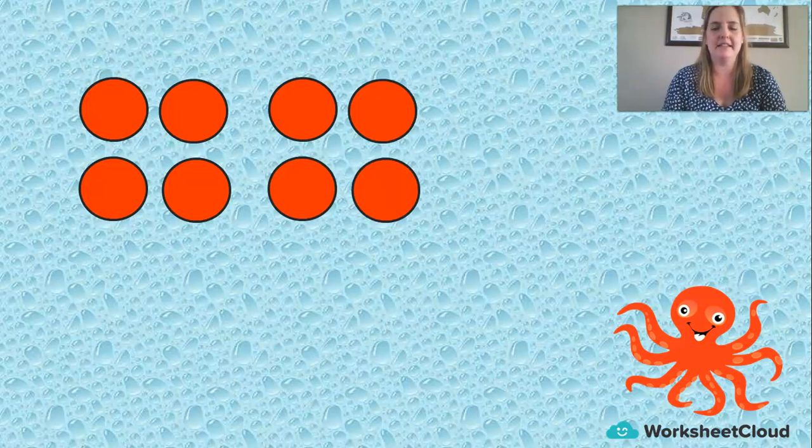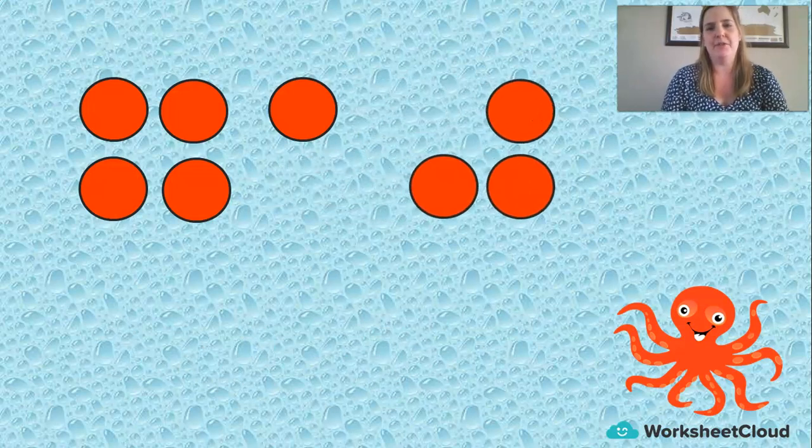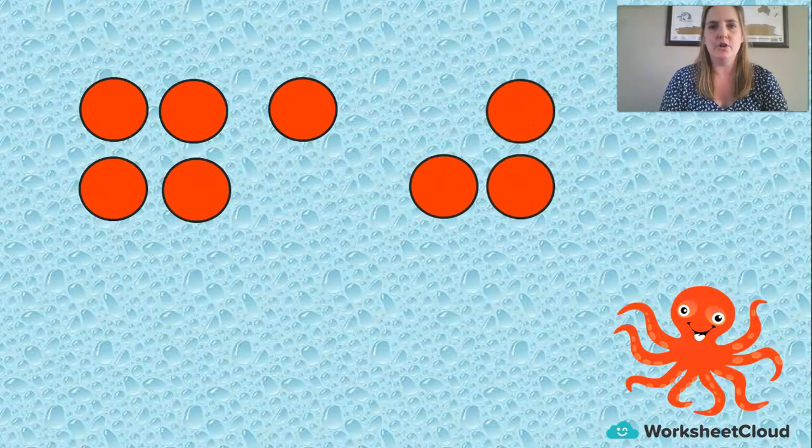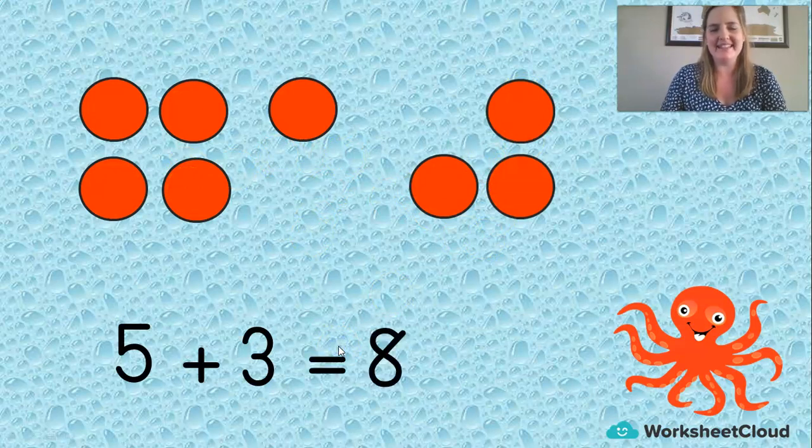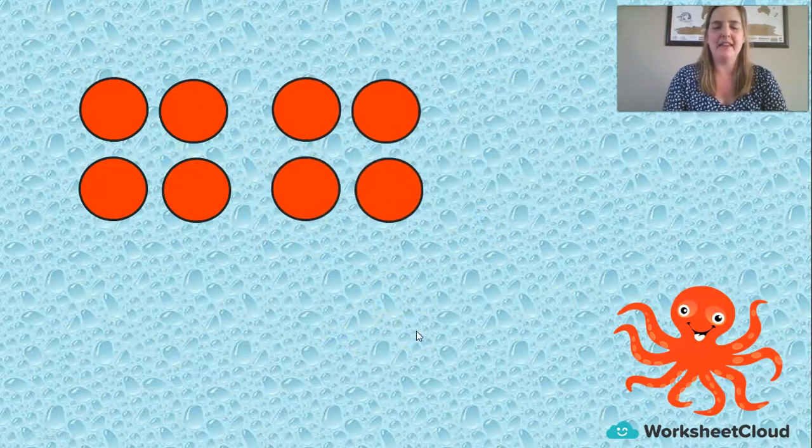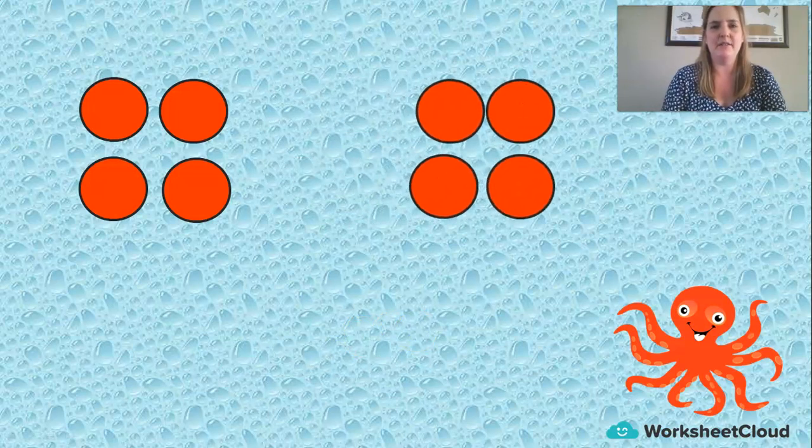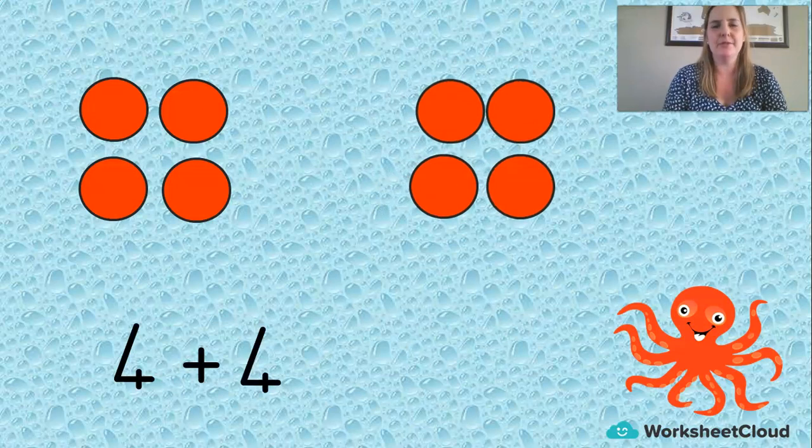How about this? We've moved three across. We've still got eight in total but we've broken it up a different way. Can you tell me the sum? Let's count. One, two, three, four, five. Five plus one, two, three is equal to eight. Very good. We've already done this one. What's the sum? Four plus four equals eight. Very good.